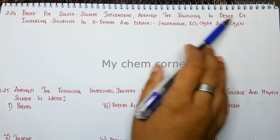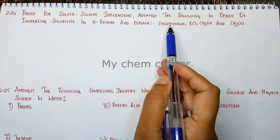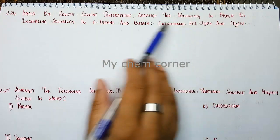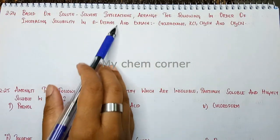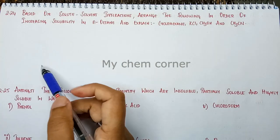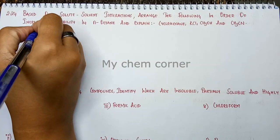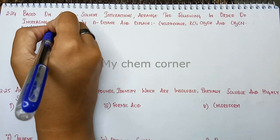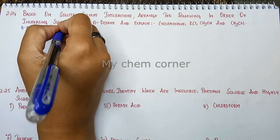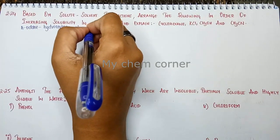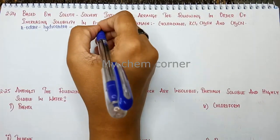First, before determining solubility when you add cyclohexene or KCl to n-octane, understand the nature of n-octane. Remember, n-octane is a hydrocarbon, and hydrocarbons are non-polar in nature.